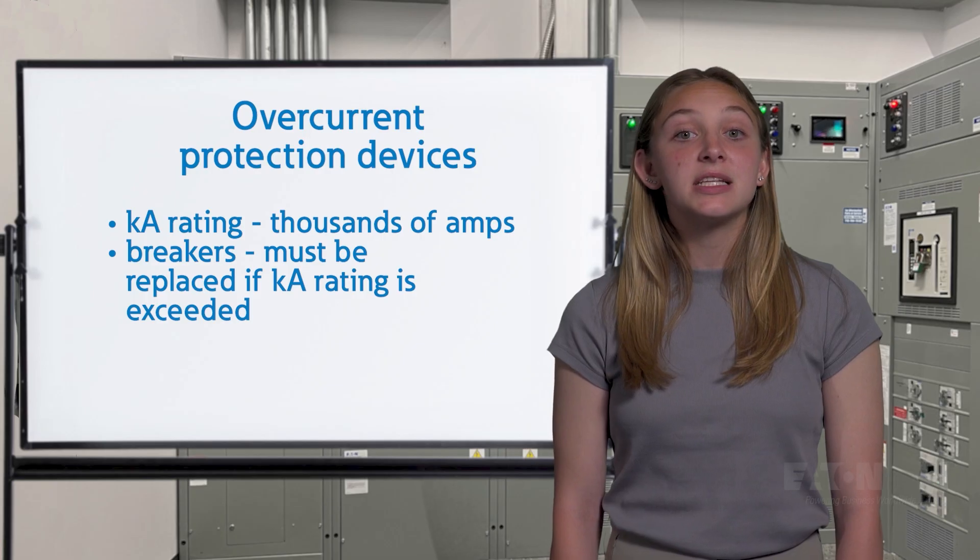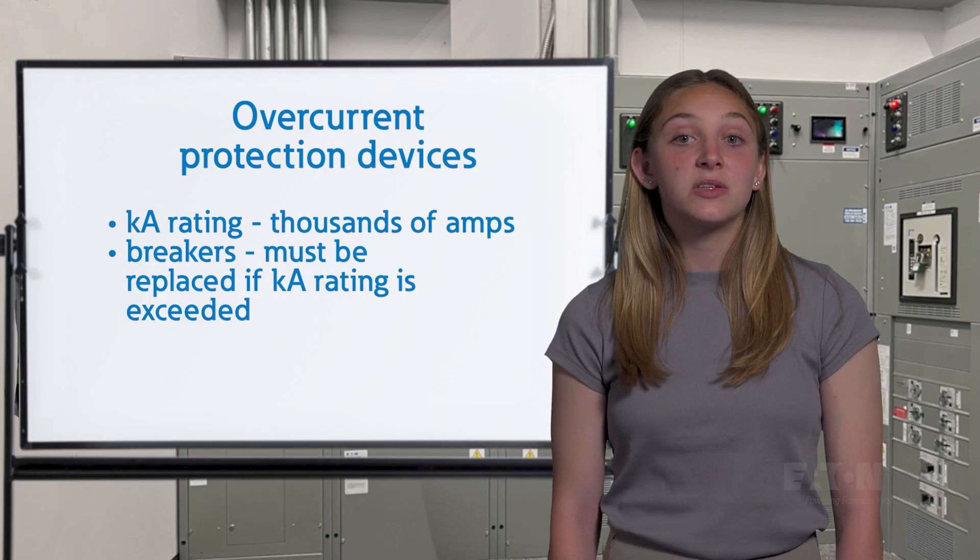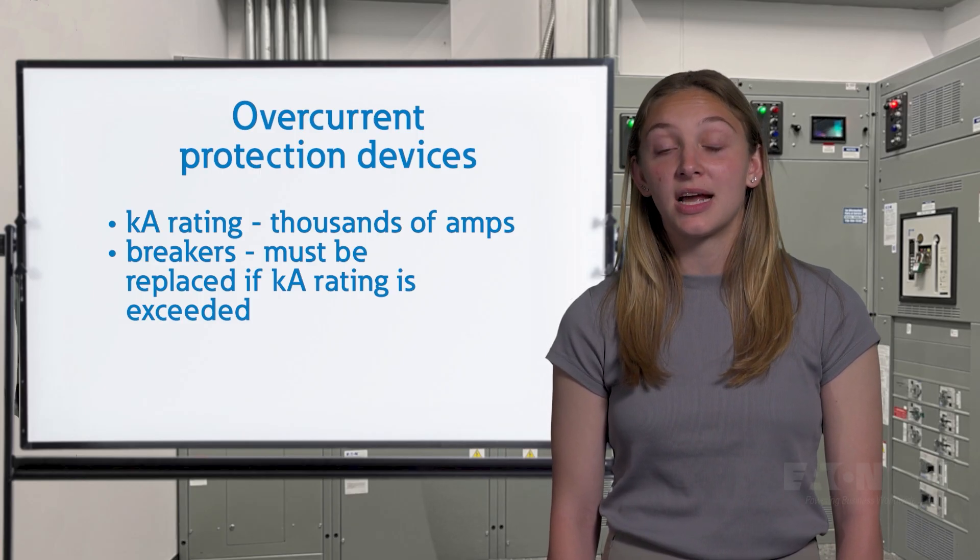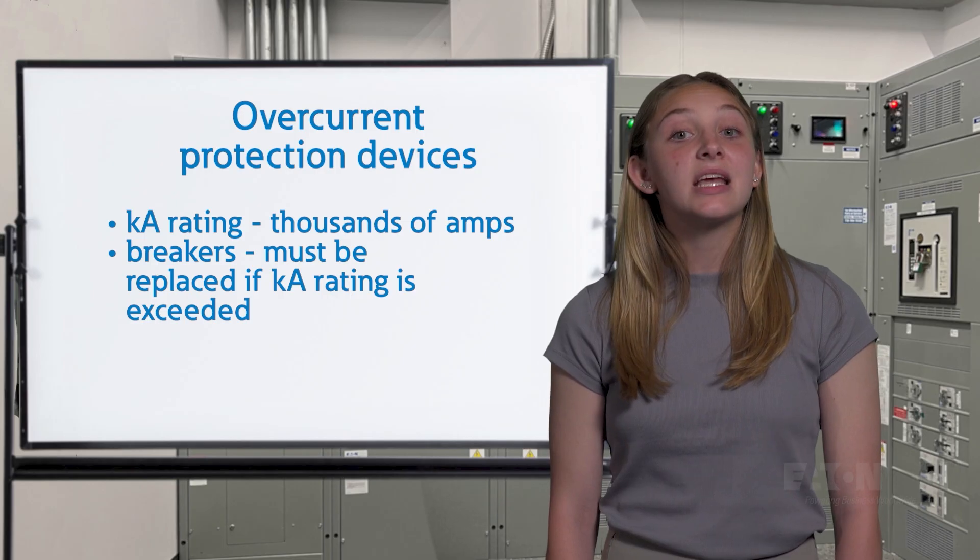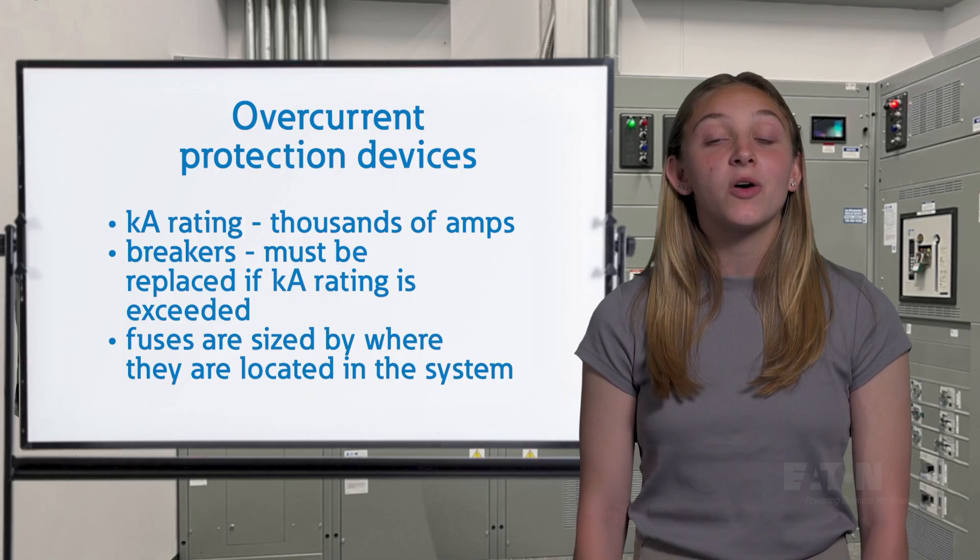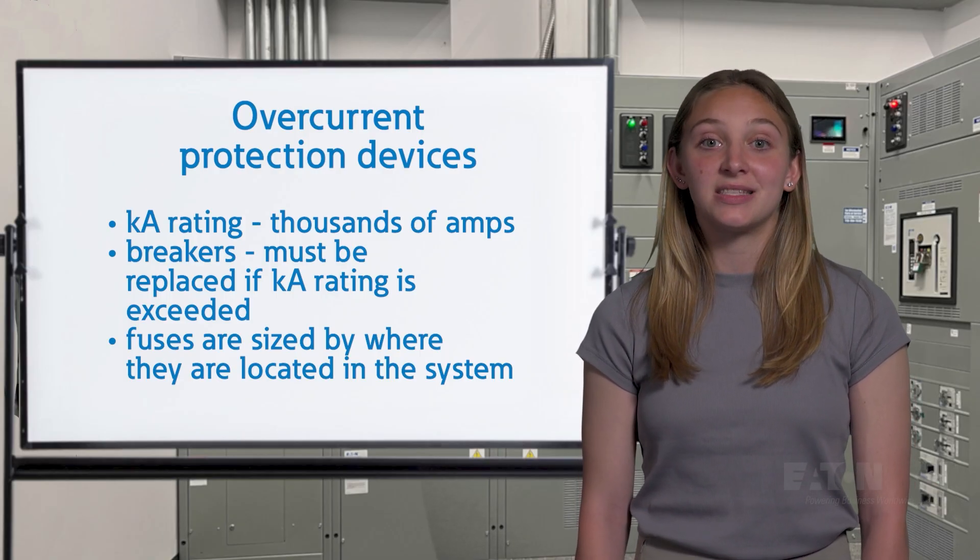In the case of breakers, they need to be replaced if they ever see a fault exceeding the kA limit because the resulting damage means that there's no guarantee that it will work properly the next time after reset. In the case of fuses, which are single operation, we always want to size their kA rating depending on where they are in the system and the maximum possible short circuit current they might see.